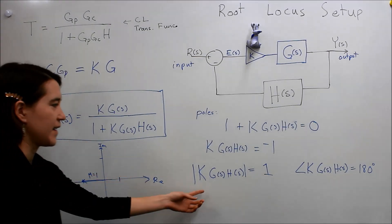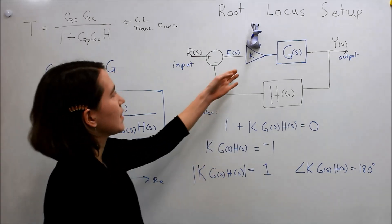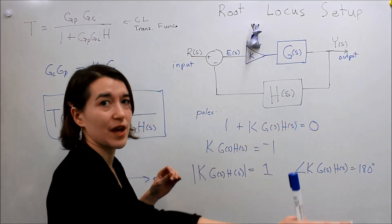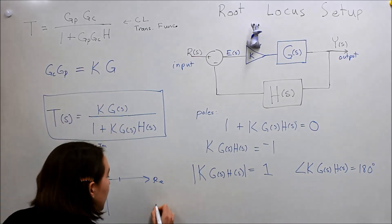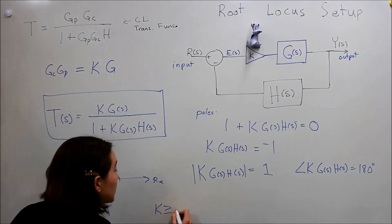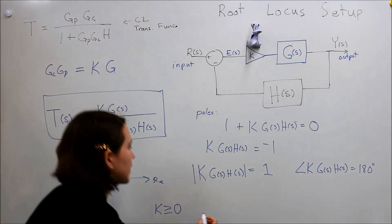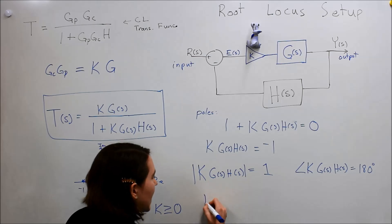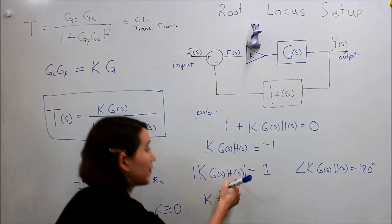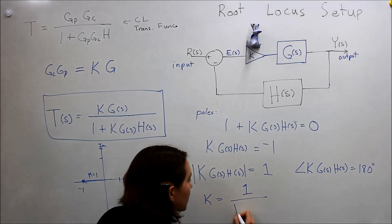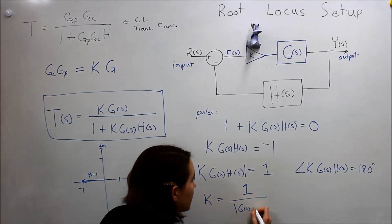So, one other thing I'll add is that this K value, we're actually going to choose to look at K from positive values of K only. So, K will be defined as greater than or equal to zero. Once we know that, we can actually take this K out of here. So, we can take the K out and actually divide by this expression. So, we can look at K equal to one over the absolute value of G of S, H of S.